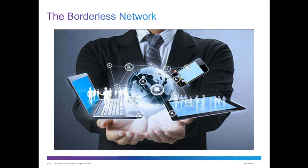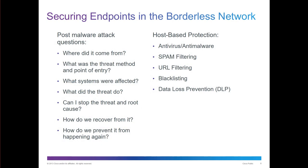The borderless network is a growing concern — how do we protect our devices, our network, our data, as our networks no longer have the traditional boundaries associated with a corporate network? Securing endpoints in that borderless network post-malware means we should be asking: where did it come from, what was the threat method, endpoint of entry, who and what systems were affected, accounts affected, what did the threat actually do, and how can we prevent this and recover from it?